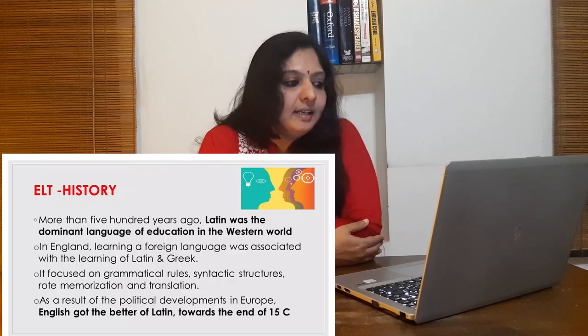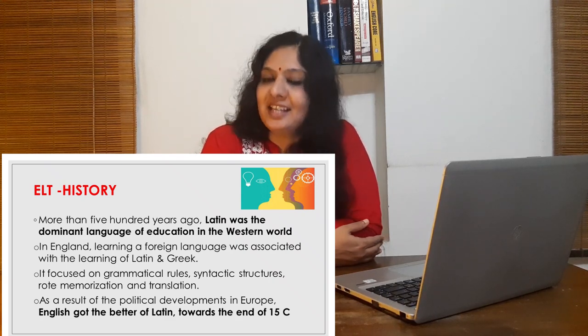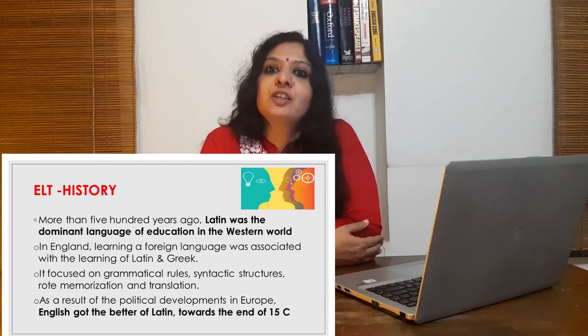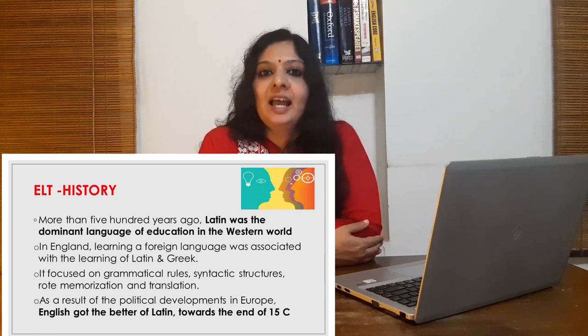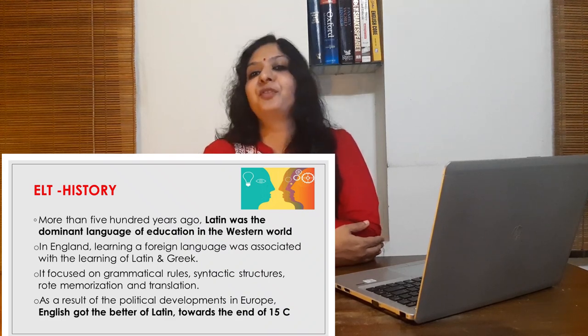More than 500 years ago, Latin was the dominant language of education in the Western world. In England, learning a foreign language was associated with the learning of Greek and Latin. It focused on grammatical rules, syntactic structures, rote memorization, and translation — with no oral use of language. Both Latin and Greek were taught for the sake of becoming scholars. As a result of political developments in Europe, English got the better of Latin towards the end of the 15th century. Language teaching began in England towards the end of the Middle Ages, when French died out as a second language of the country. King Henry IV and Henry V of the Tudor dynasty stressed the use of English in the place of French.